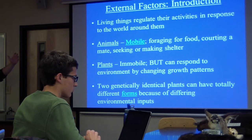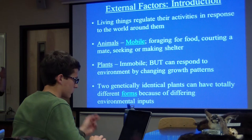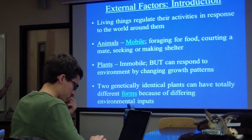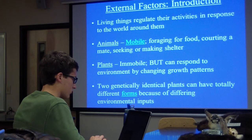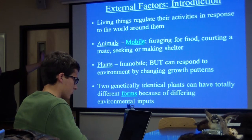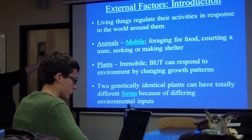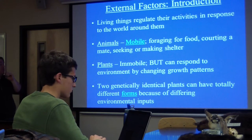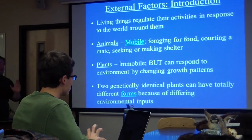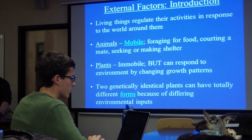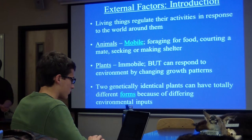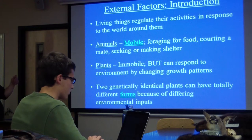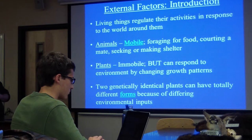We all know that living things respond to stimuli and regulate their activities in response to the world around them. Animals are mobile — they can forage for food, court a mate, seek out and make shelters. Plants are immobile, but they can respond to their environments by changing their growth patterns. That's a very common plant response to environmental factors. In fact, two genetically identical plants can have totally different forms — you may not even recognize them as the same species because of differing environmental inputs.